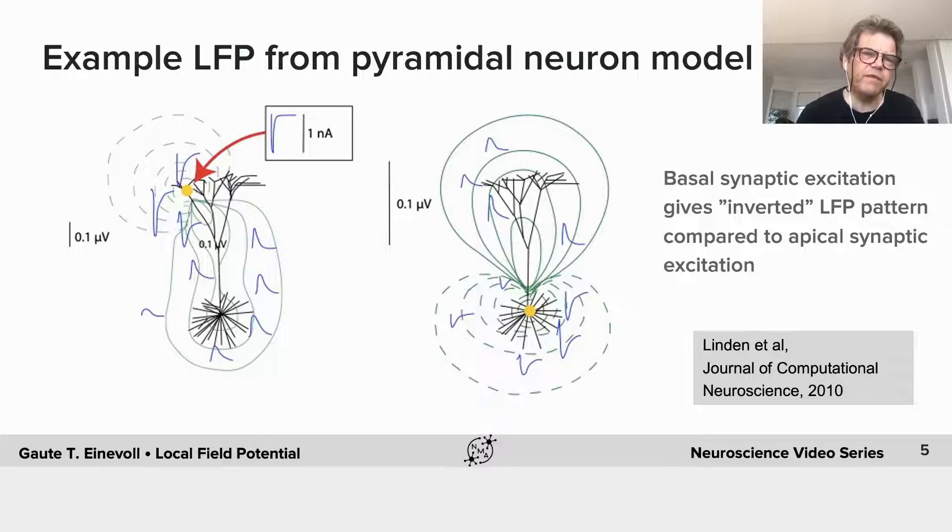However, with LFP it's different because the LFP is typically generated by synaptic inputs into neurons. And then the recorded potential will depend very much on where this synapse is. For example, if the synapse is positioned at the apical dendrite on this pyramidal neuron, like in this case,